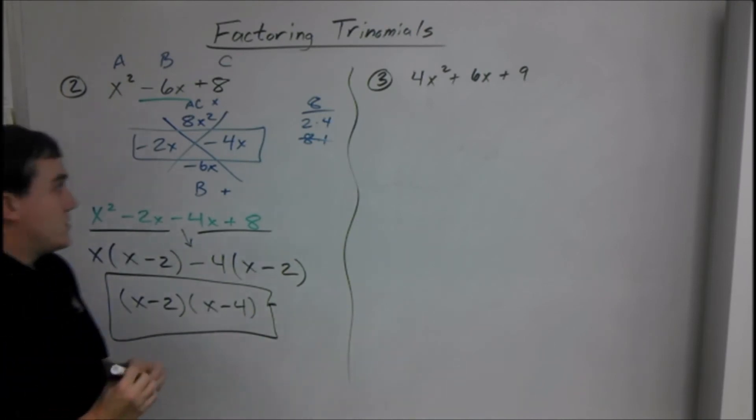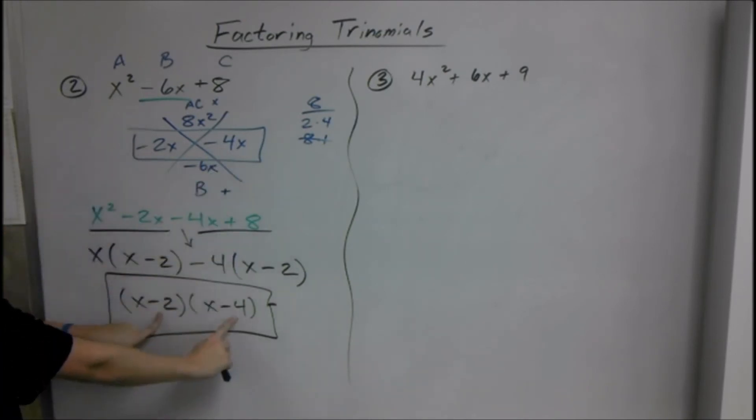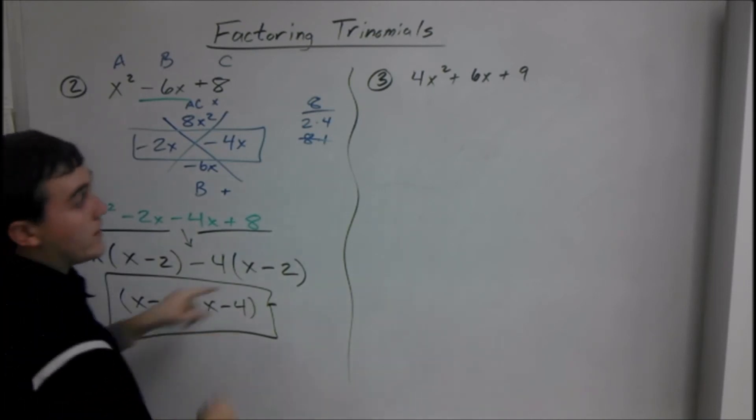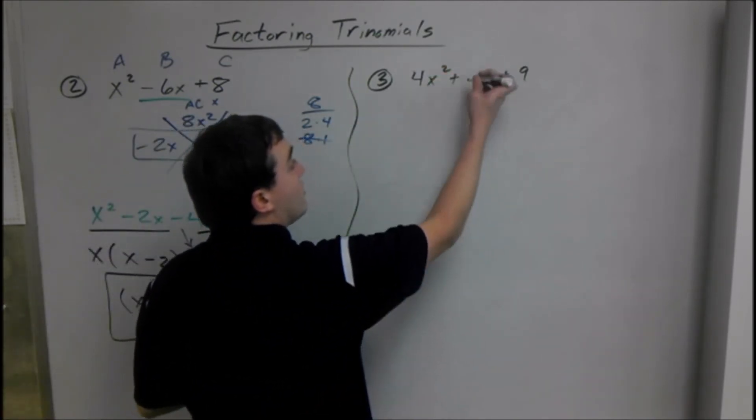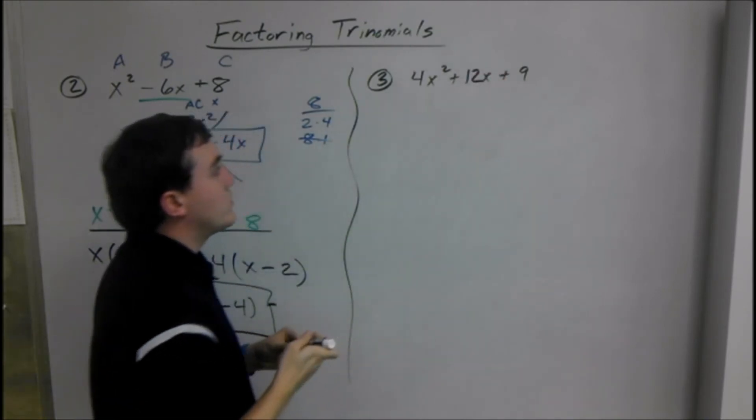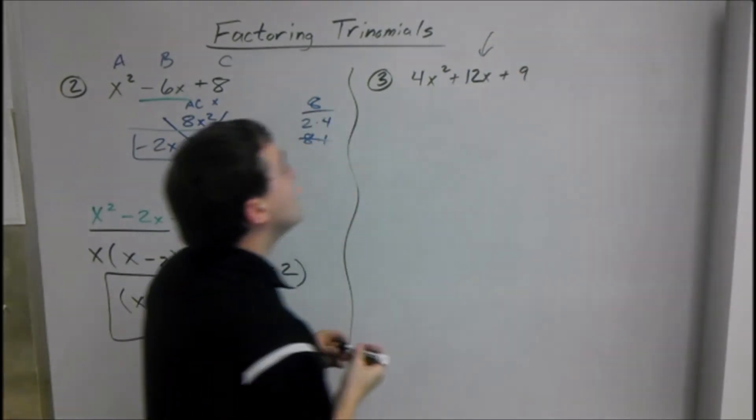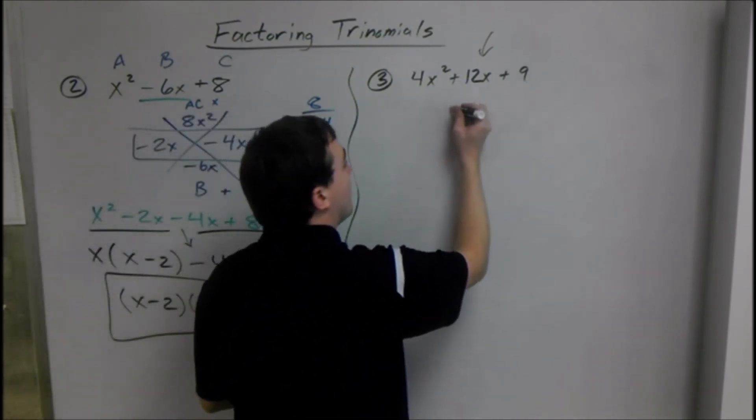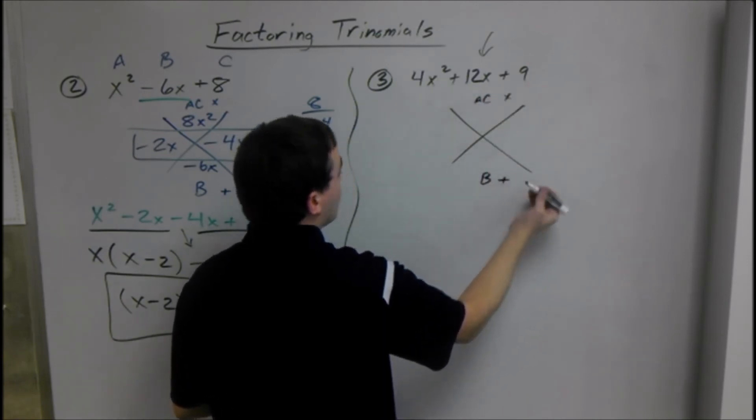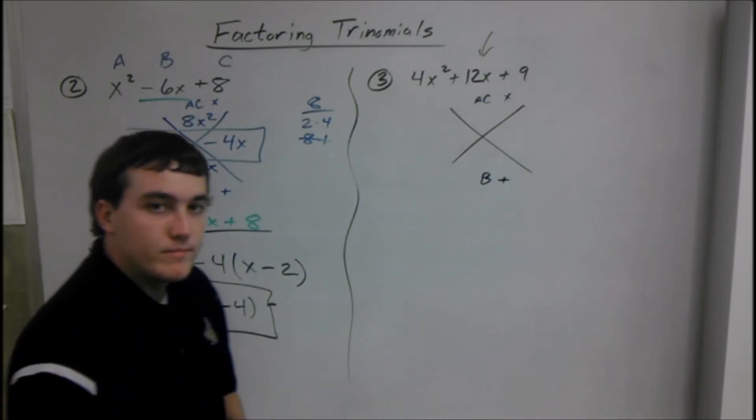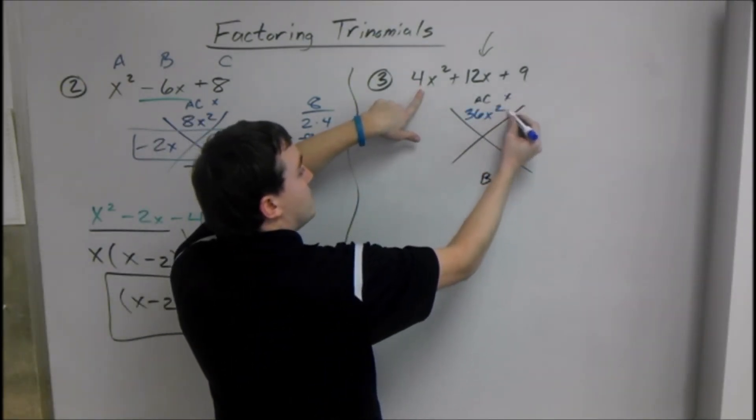Now the easy way of doing this, when this is just X squared and not a number times X squared, these are going to be your answer: negative 2 and negative 4. It does not always work that way when it looks like something like this. And this is actually supposed to be a 12 here. So we have 4X squared plus 12X plus 9. Same thing here. We need two things that multiply to give us A times C, that add up to B. 4X squared times 9 is 36X squared, that add up to 12.